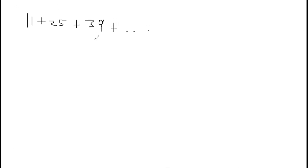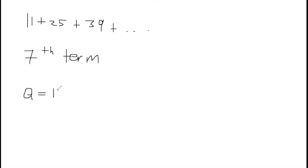Now let us look at this example. We have to find the seventh term for this series — it's a series because we're seeing addition. We need to know A, our first term, which is 11, and D, the common difference. Some persons can see it directly, while others will calculate 25 take away 11 to arrive at 14.